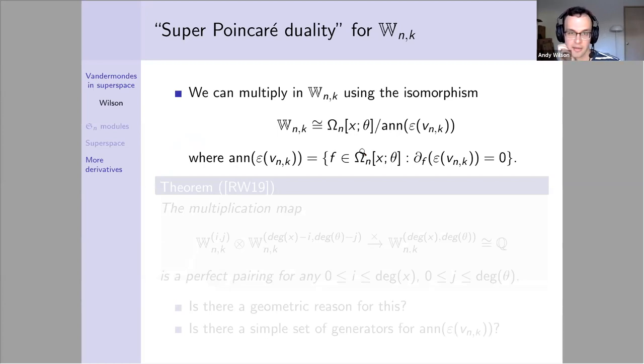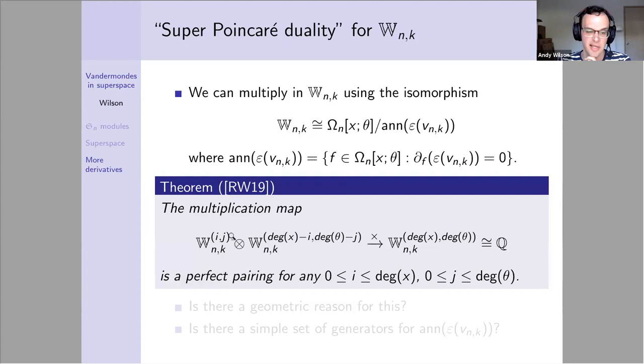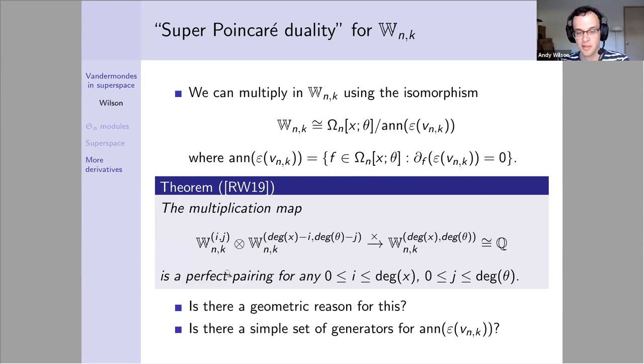Let me say more about what I mean by this. I'll call this property super Poincaré duality. We can think of this module as a quotient where we start with super polynomials and mod out by all the polynomials that annihilate this anti-symmetrized superspace Vandermonde. Then we can multiply in this quotient on the right. What we proved is that if you start in some particular piece on the bi-grading, the i and j graded piece, and multiply by the dual piece across this table, this is a perfect pairing.